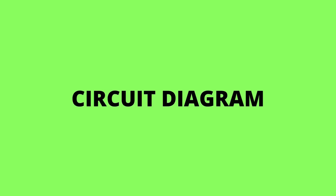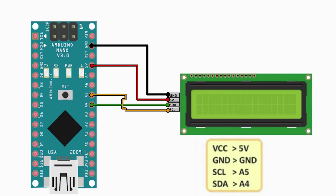Circuit diagram. This is our basic circuit to display text on our LCD display. Now upload the code. Code is available in the description.